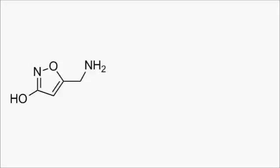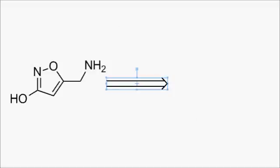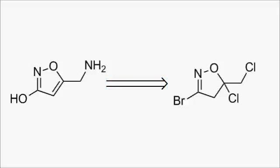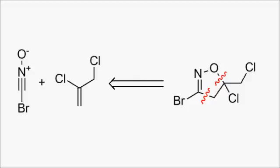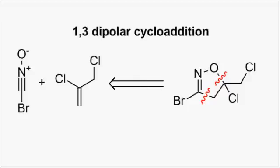This synthesis of muscimol was done in 1992 by Peverello and Verrassi, and a few retrosynthetic steps takes the target molecule back to this intermediate. The centerpiece of the synthesis is a 1,3-dipolar cycloaddition between a nitrile oxide and an alkene.